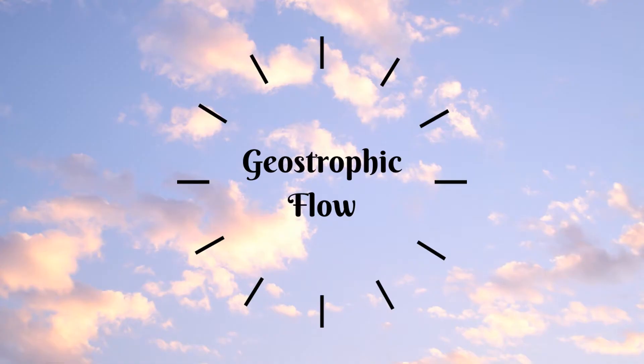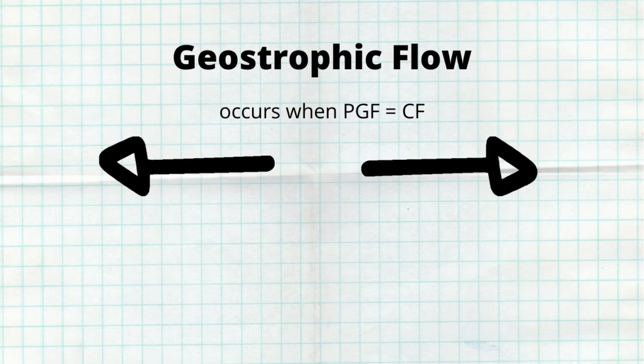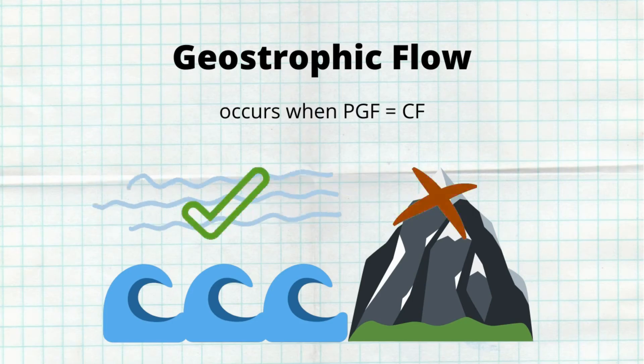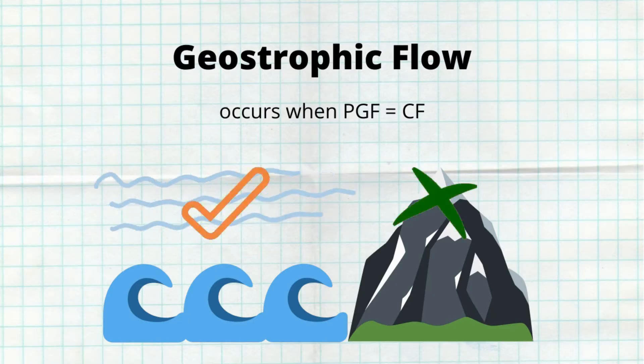A third concept to keep in mind is geostrophic flow. Geostrophic flow occurs when wind actually blows parallel to isobars — in other words, it is perpendicular to the pressure gradient force. Geostrophic flow occurs when pressure gradient force is equal to Coriolis force, and it only occurs in the upper atmosphere and over oceans where there is very little friction.